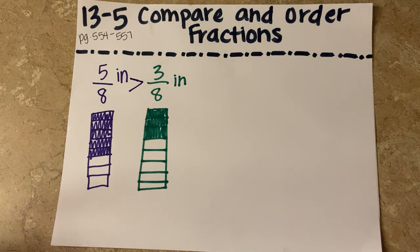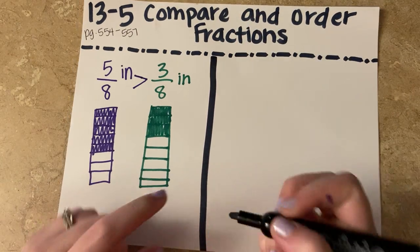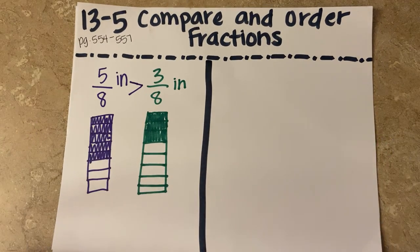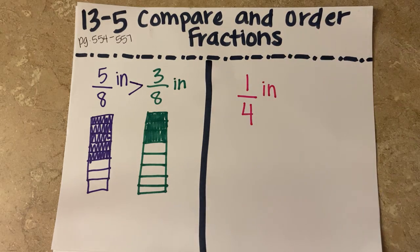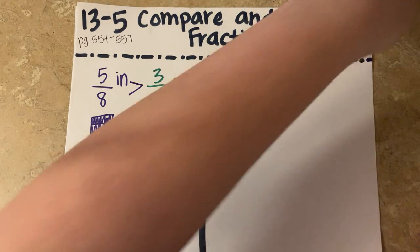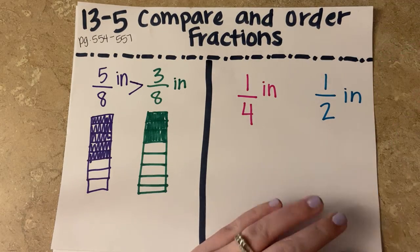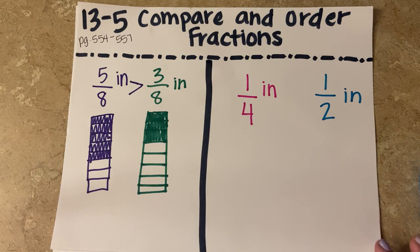So then the next part of this question is asking me about two different insects. It says, which is longer, a mosquito or a lightning bug? So we're going to be comparing one-fourth of an inch for a mosquito and one-half of an inch for the lightning bug. And this time I'm going to show you how we can compare fractions on a number line.